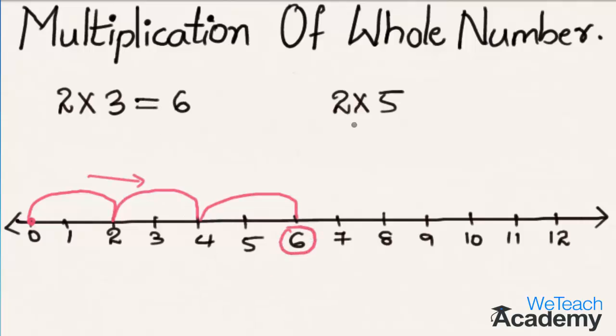Now let us consider the second example, that is 2 into 5. Starting from the 0, 5 jumps each of 2 steps towards the right on the number line, and we reach here the number 10. So we can say that 2 into 5 is equal to 10.